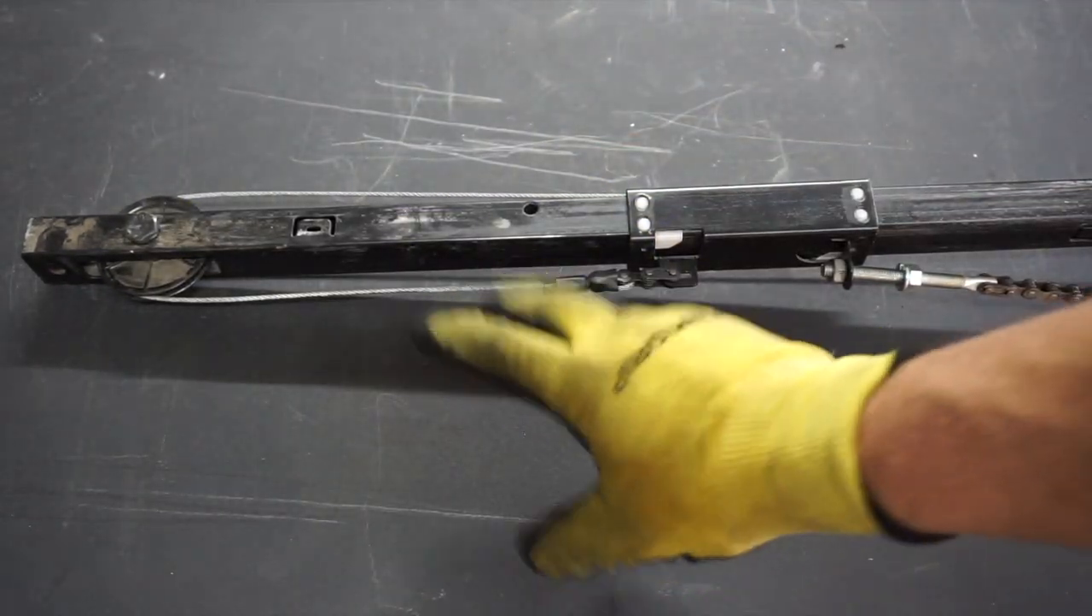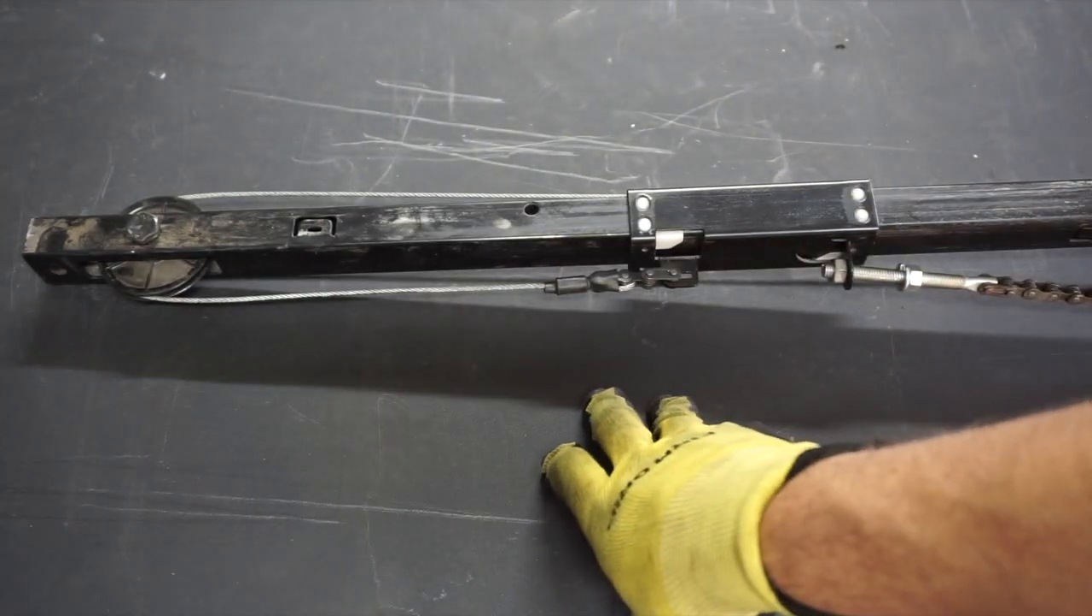Replacing this piece on this particular motor is going to be the same as changing it on a belt driven one, a chain driven one, made by Chamberlain. These are the ones purchased from Home Depot, Lowe's, or Costco.